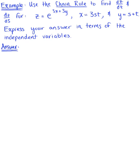Use the chain rule to find the derivative of z with respect to t and the derivative of z with respect to s. Express your final answers in terms of the independent variables.